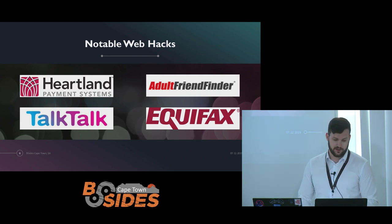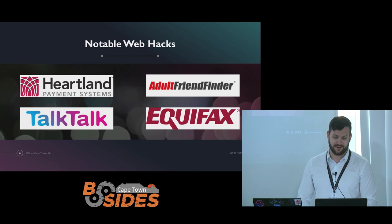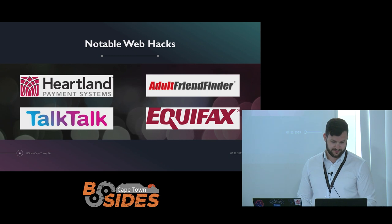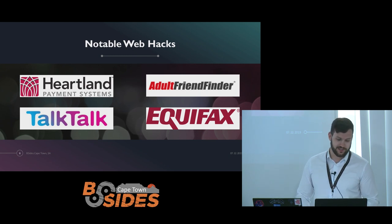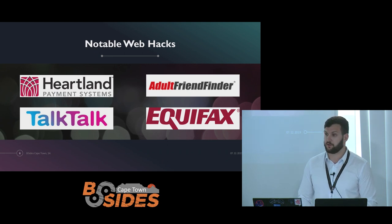Then you have Adult Friend Finder — that was a local file inclusion. 339 million accounts were exposed, which included around 80,000 US military emails and 5,500 US government emails. And finally, the most recent high-profile one was the Equifax hack: 143 million customers affected, with social security numbers, credit cards, and personally identifiable information all lost through an Apache Struts vulnerability which allowed remote attackers to execute arbitrary commands through a Content-Type HTTP header.